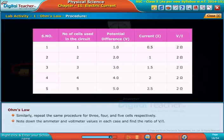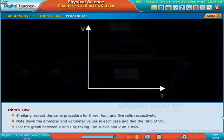Note down the ammeter and voltmeter values in each case and find the ratio of V by I. Plot the graph between V and I by taking I on x-axis and V on y-axis.